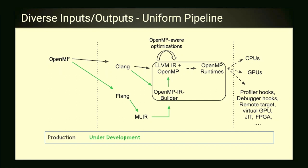This is a rough sketch of how OpenMP is compiled in the LLVM framework and executed. You have a program that uses OpenMP — either C, C++, or Fortran. C and C++ go through Clang, which is an OpenMP-capable compiler, or through Flang. It ends up in LLVM IR plus OpenMP runtime calls. Then we do OpenMP-aware optimizations and interact with the runtime to execute on CPU, GPUs, FPGAs, or JIT it at runtime.